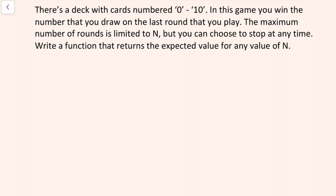There's a deck with cards numbered 0 through 10. In this game you win the number that you draw on the last round that you play. The maximum number of rounds is limited to n, but you can choose to stop at any time. Write a function that returns the expected value of your winnings for any value of n.